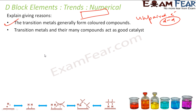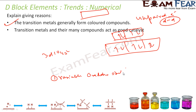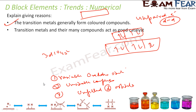Since zinc's d orbital is completely filled — all ten electrons present — there is no scope for electron movement, so zinc is not colored. Transition metals and their compounds act as good catalysts due to variable oxidation states and the formation of unstable complexes. These unstable complexes form because of unpaired electrons and available d orbitals. They also provide surface area for reactions, again due to unfilled d orbitals. Most properties of transition metals arise from unpaired d electrons or unfilled d orbitals.